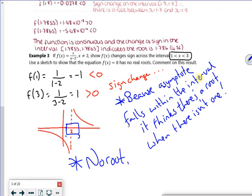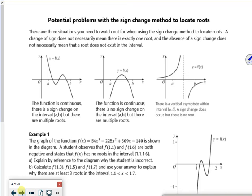So it says potential sign change problems. Look at this one here. It's continuous, f of a is positive, f of b is negative, and I've got three roots. So that's just a poor choice of interval there.